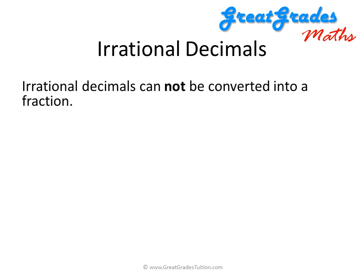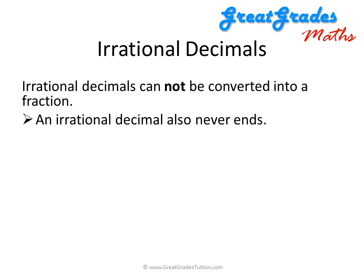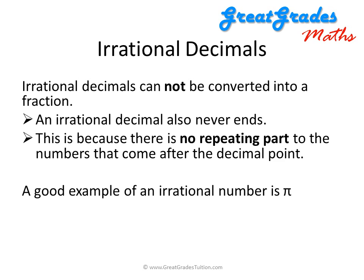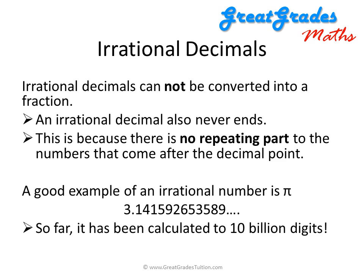Now let's look at irrational decimals. Irrational decimals cannot be converted into a fraction, and they also never end because there is no repeating part after the decimal point. A good example is pi, symbolised by the Greek letter π, which is 3.141592653589... It carries on and on — pi has been calculated to 10 billion digits with no part that repeats itself.